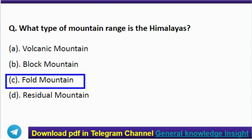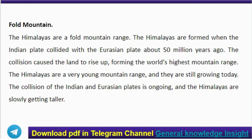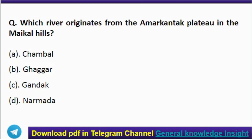The Himalayas are a fold mountain range. They were formed when the Indian plate collided with the Eurasian plate about 50 million years ago. The collision caused the land to rise up, forming the world's highest mountain range. The Himalayas are a very young mountain range and they are still growing today, as the collision of the Indian and Eurasian plates is ongoing.